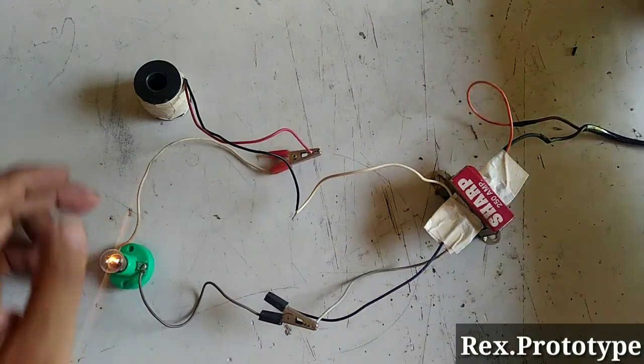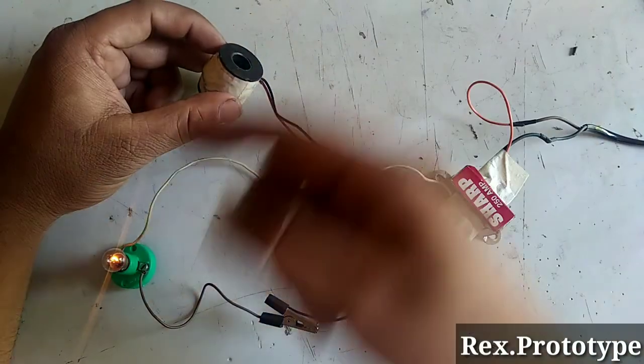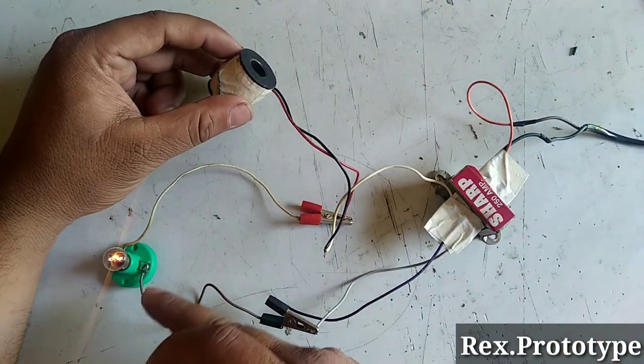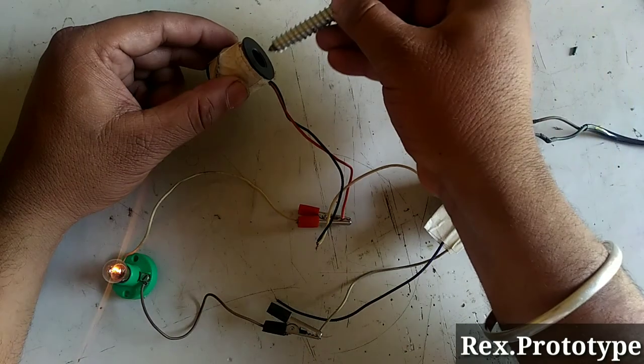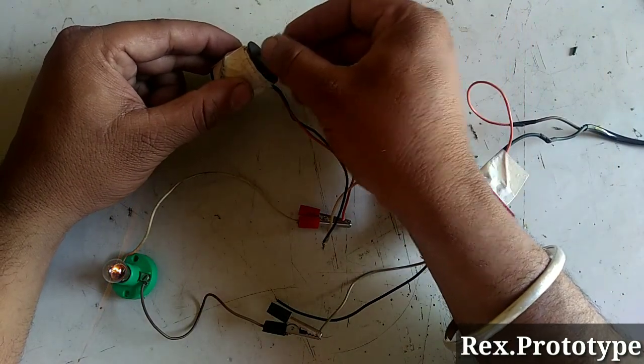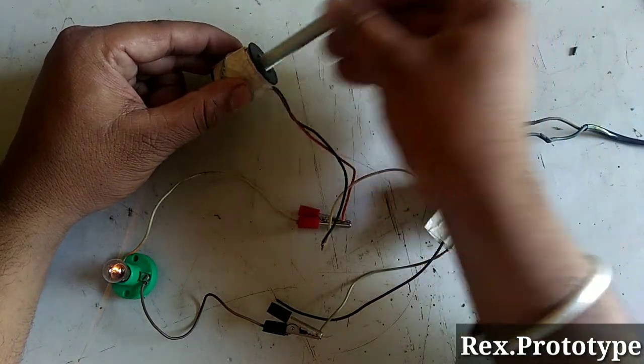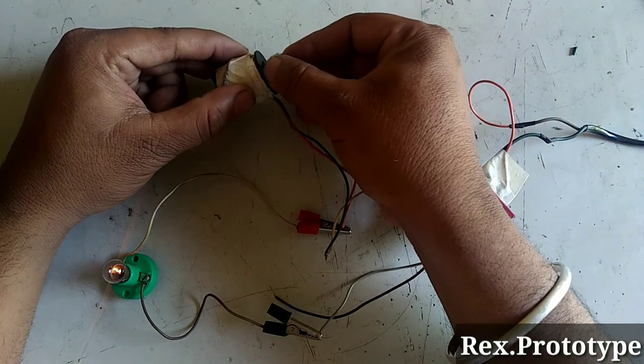Now if we insert a soft iron core here, look at the brightness of the bulb. You can see the brightness of the bulb is decreased.